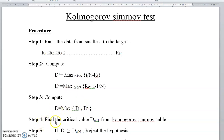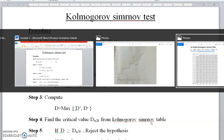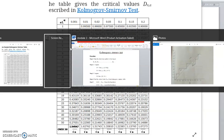In step 4, find the critical value D(α, n) from the Kolmogorov-Smirnov table. In this table, alpha and n values are given. Based on these two values we have to find the critical value D(α, n).